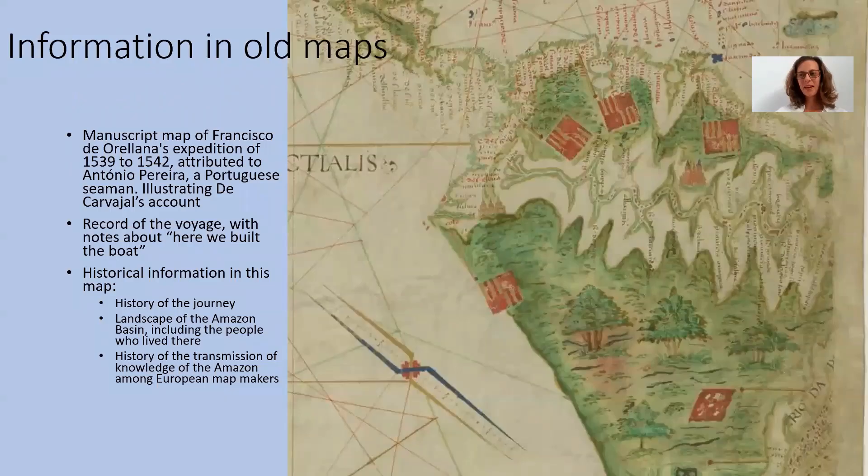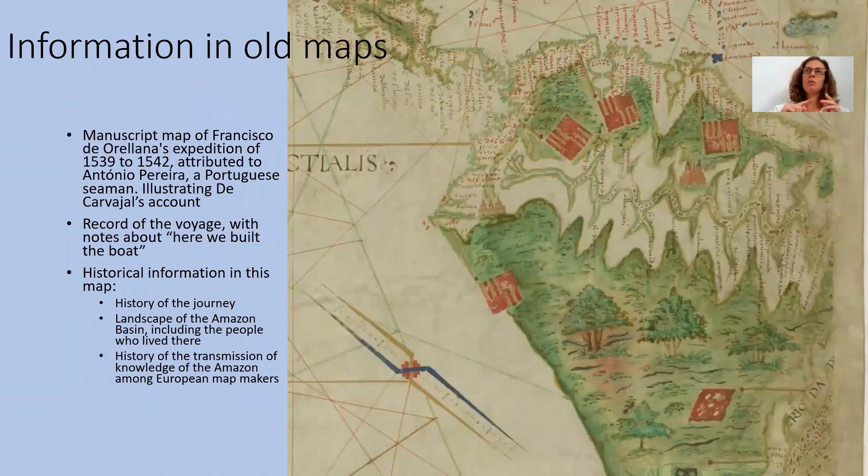The example I'm sharing here is a map that illustrates a travel log. The travel log is written by de Carvajal, who accompanied Francisco de Orellana when he took an expedition in the Amazon. The map itself is made by Antonio Piera, a Portuguese seaman, in one of the European courts during this time.